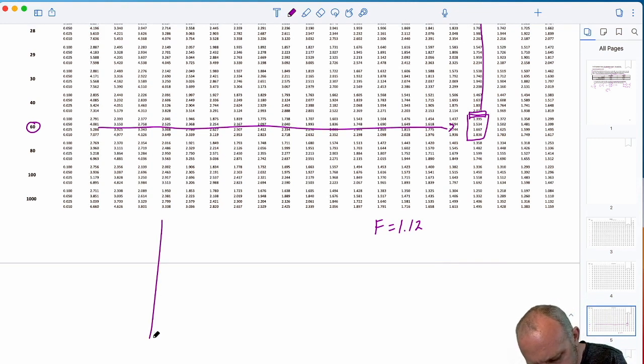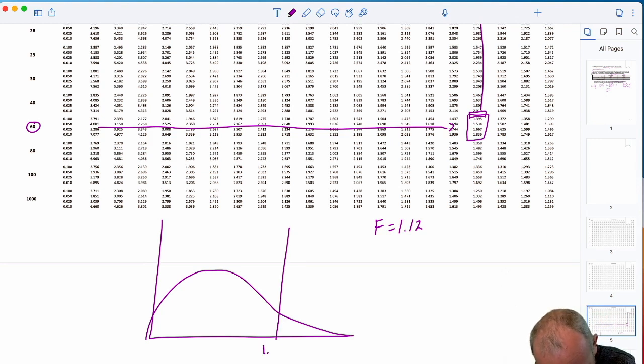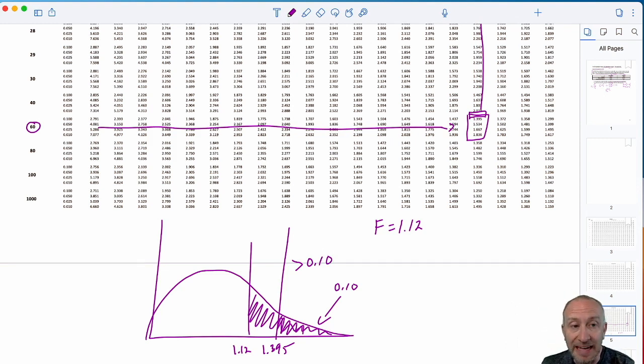So, what does that mean? Well, for that F-distribution, that smallest value is 1.395. That gives me an area in that upper tail of 0.1. Our test statistic, 1.12, is somewhere back here. Which means the corresponding probability in the upper tail, well, it must be something greater than 0.1. And keep in mind, this is a two-tailed test. So, our p-value? Our p-value is going to be greater than double that value.